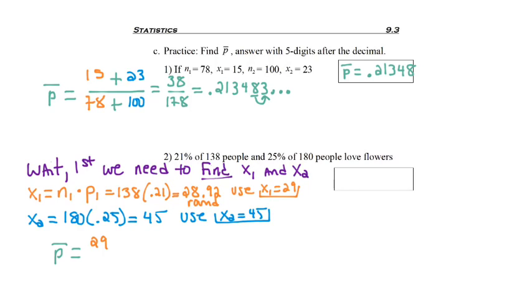So to find P-bar, I start with 29, the number of successes for my first population, plus the next number I found, which was 45, and that sum is divided by N1.